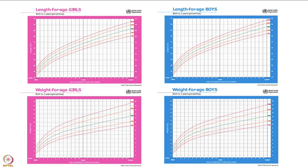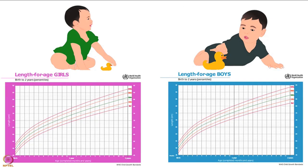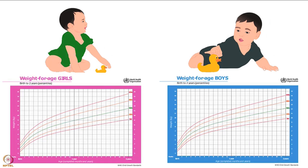Percentile growth charts are discussed in another tutorial of the same series. Basics of growth charts and plotting are explained in that tutorial. The first type of percentile growth chart, length for age, is also explained. It is important that you watch it before watching this tutorial. Now, let's learn more about the second type of percentile growth chart — the Weight for Age Growth Chart.